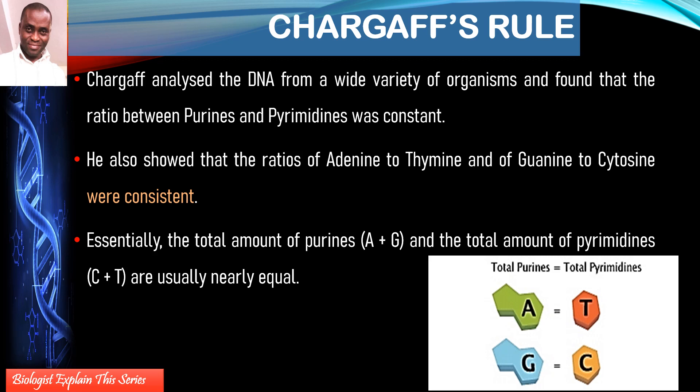The ratio may differ from organism to organism, but within the same species it is constant. The total amount of purines (A + G) equals the total amount of pyrimidines (C + T) in all organisms. This can come up as an exam question: if you know the percentage of one base, you can figure out the other three. For example, if adenine is 25% of a DNA sample, find the percentages of the other bases.